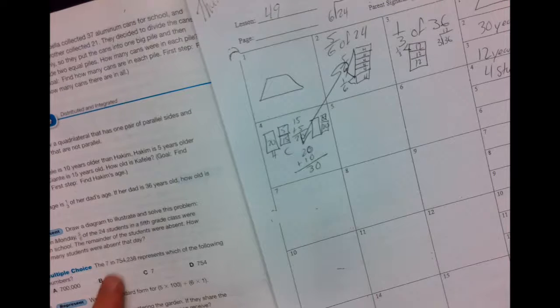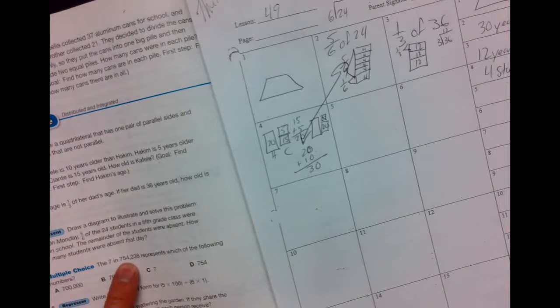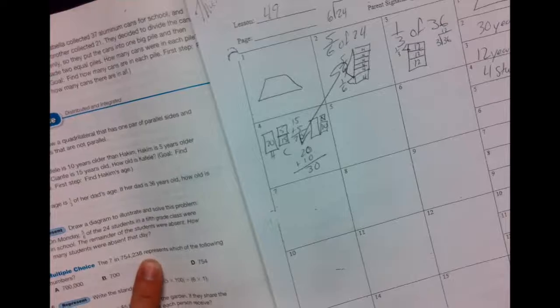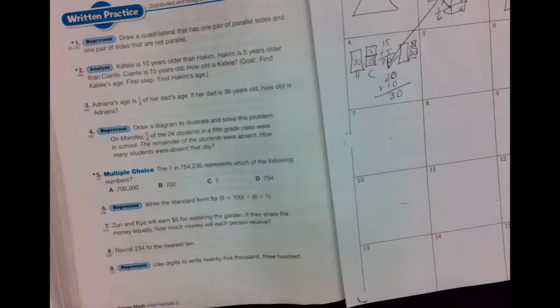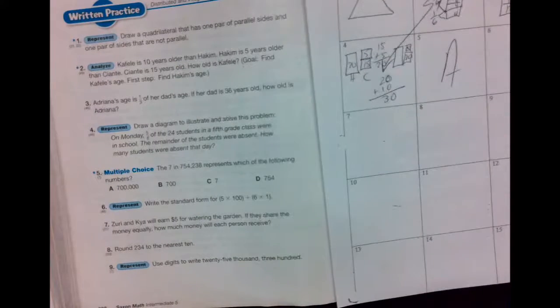The seven in this number, 754,238, represents which of the following? Face, place. I mean, that is about as easy as you can get. I'll let you do that one on your own.